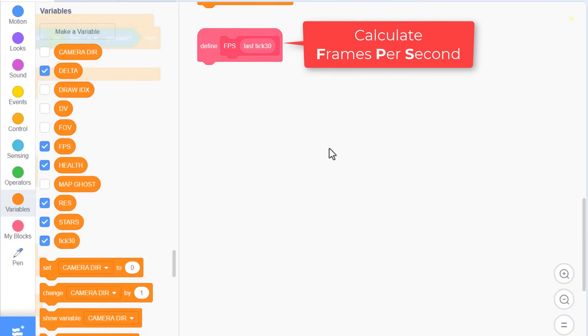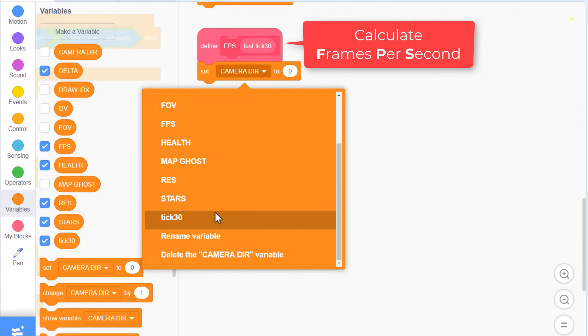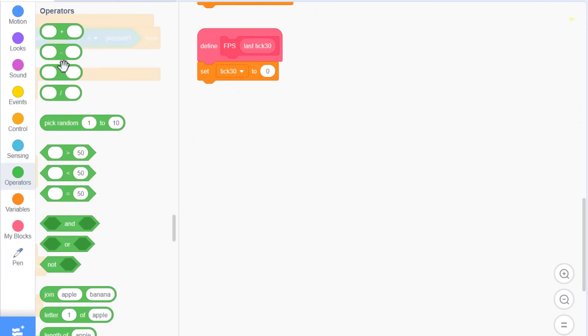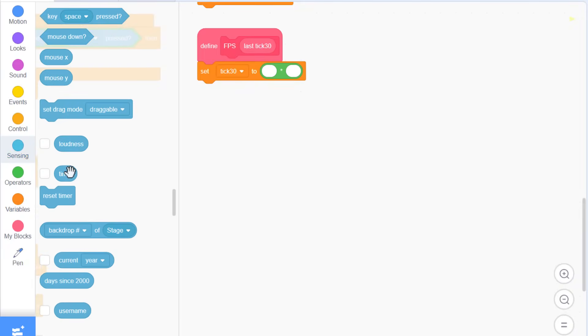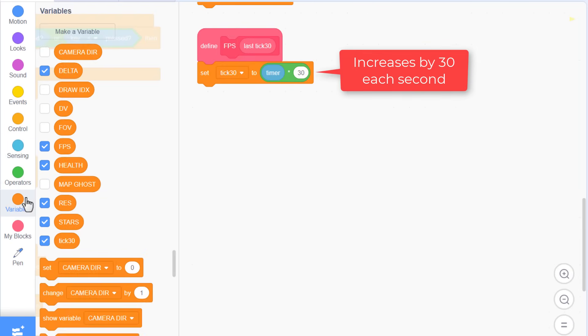This is nice and easy. We calculate our current game time. Set tick 30 to the multiple of timer, that's the current time, and 30. This value will now increase by 30 every second, keeping in time with our desired frame rate.